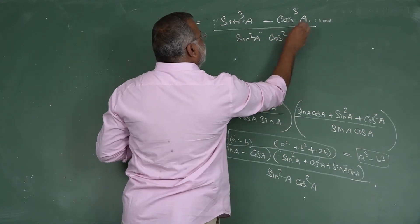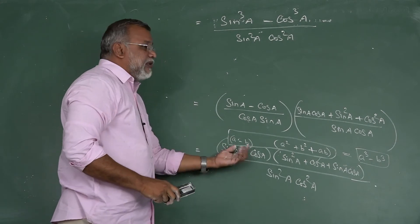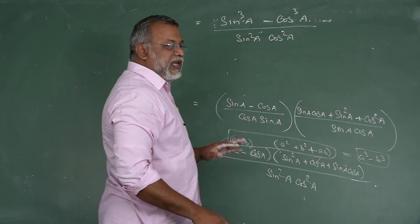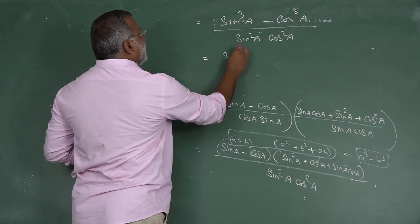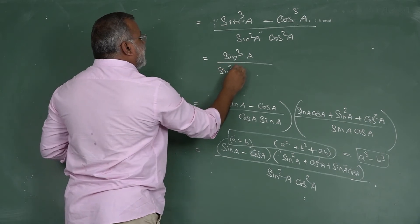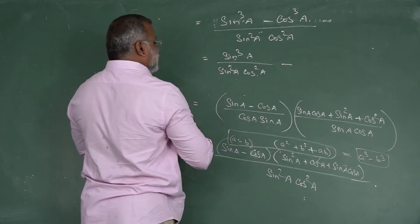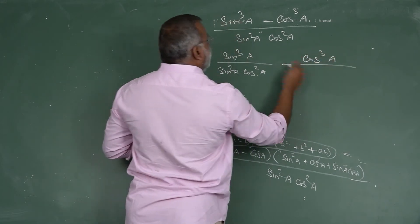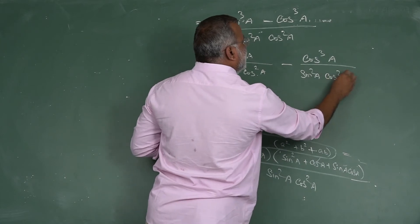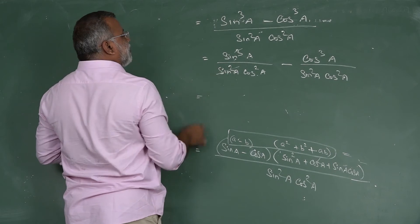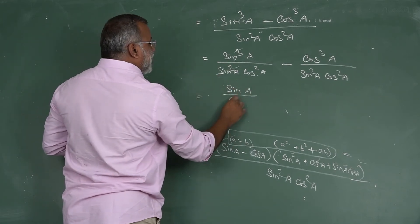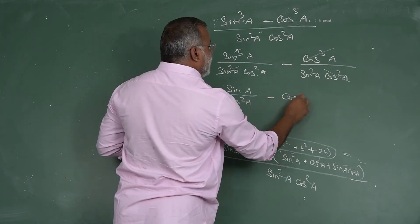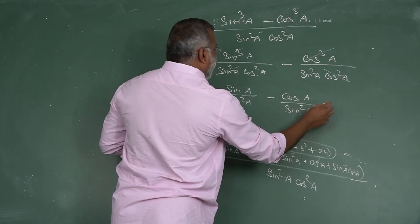Splitting the expression: sin³A / (sin²A · cos²A) - cos³A / (sin²A · cos²A). Simplifying the first term: sin³A / sin²A = sin A, so we get sin A / cos²A. For the second term: cos³A / cos²A = cos A, leaving cos A / sin²A.